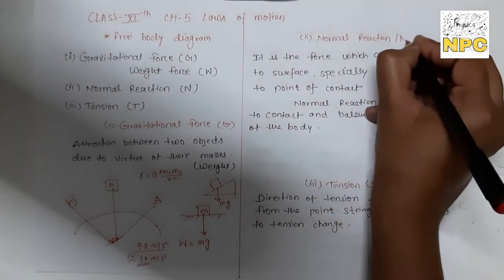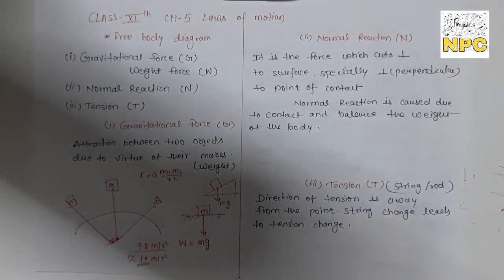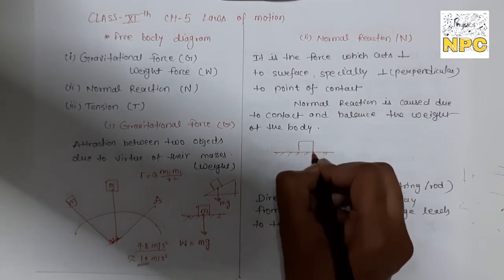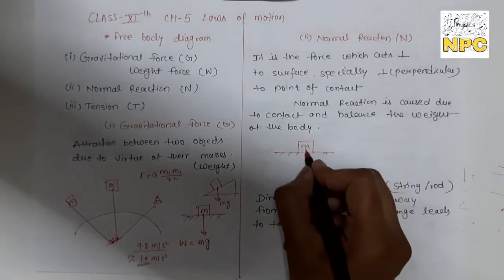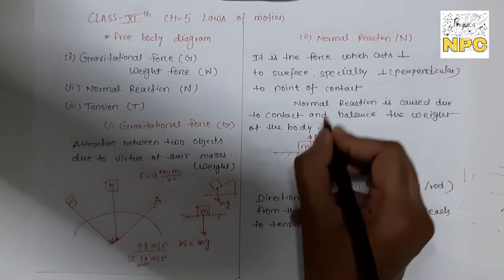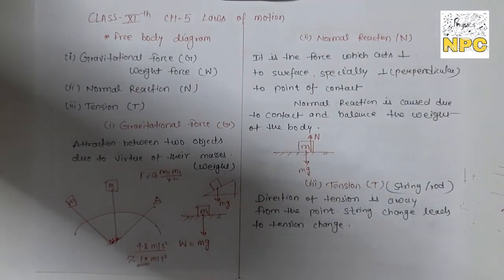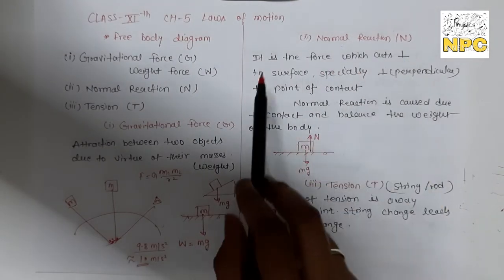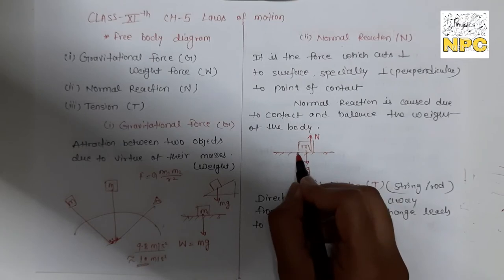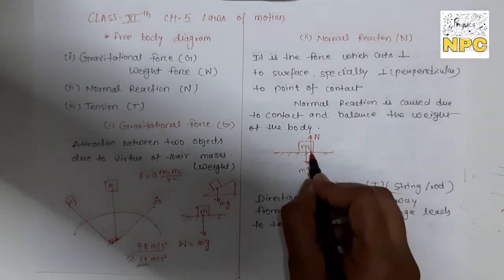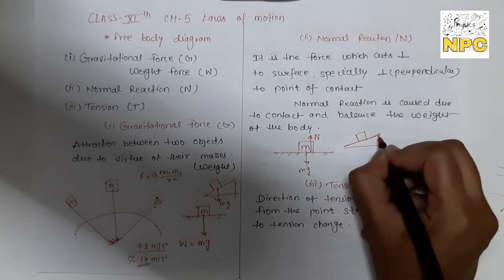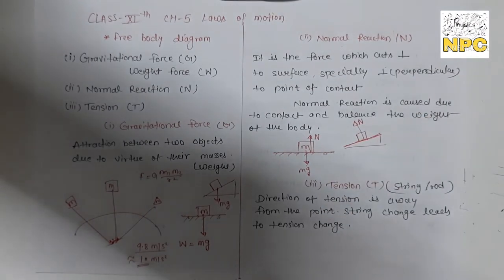The second force is normal reaction, represented by capital N. Normal reaction acts at the point of contact and is always perpendicular to the surface. If the body is on an inclined plane, the normal reaction is still perpendicular to that surface — wherever the surface is, the normal reaction acts perpendicular to it.